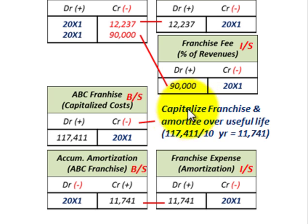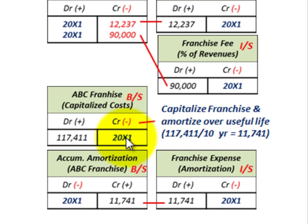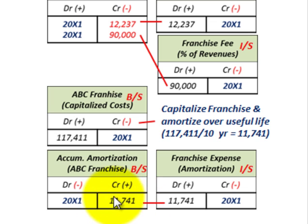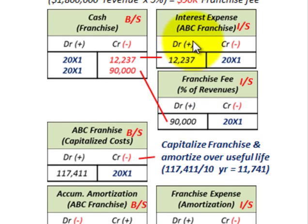The only other thing to deal with is the capitalization of the franchise and its amortization over its useful life. We capitalize it on the balance sheet at the total franchise cost of $117,411, recorded when we purchased the franchise in 20X1. Since we purchased it at the beginning of the year, we record one year of amortization: we credit accumulated amortization for the ABC franchise — a contra account — for $11,741, and debit franchise amortization expense on the income statement for $11,741.